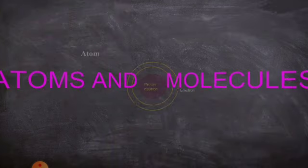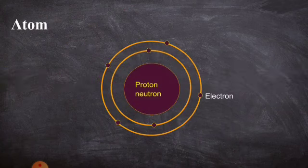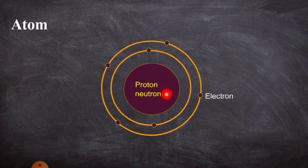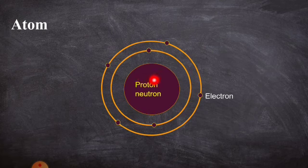So what is an atom? Atom is the smallest particle and it is made up of electrons, protons, and neutrons. The electron is revolving around the nucleus, whereas proton and neutron are present at the center of the nucleus.